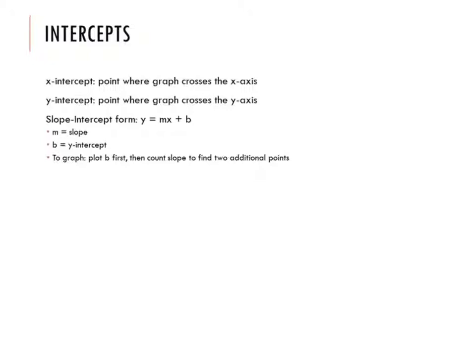Remember the x-intercept is a point, it's the point where the graph crosses the x-axis. And the y-intercept is a point, it's a point where the graph crosses the y-axis. Most lines have both an x-intercept and a y-intercept.